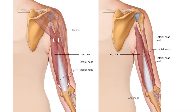We have a posterior view of the right arm and we are looking at the triceps brachii muscle. Triceps means three heads — there are three heads to this muscle: a long head, a lateral head, and a medial head. Brachii means of the brachium, or in lay terms, of the upper arm.